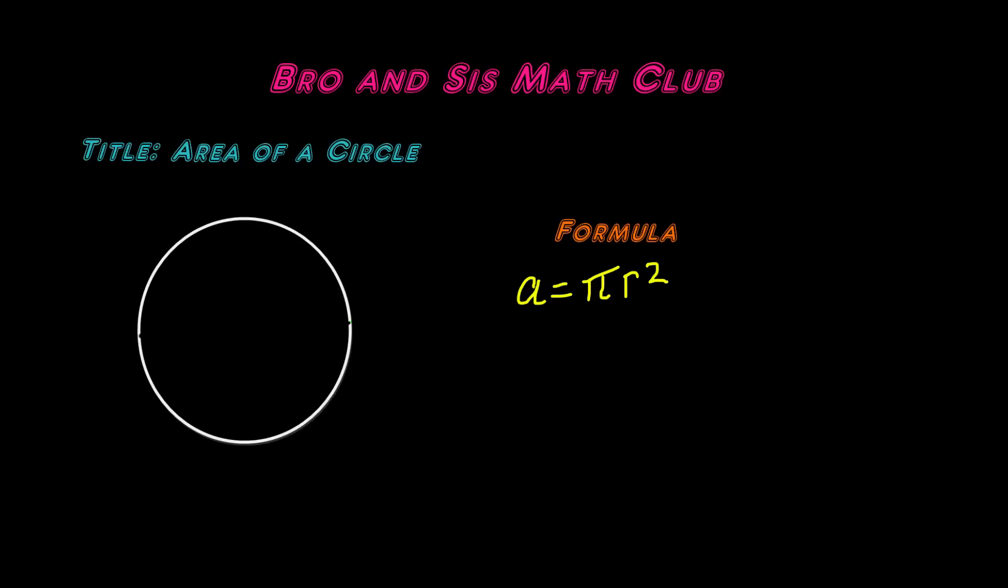So before we get started, let's go ahead and review what the radius is. The radius is the line that stretches from the middle of the circle to any end of the circle. So let me demonstrate. We know that the circle has a midpoint, which is the center. So this is the center of the circle. Now from the center to any end of the circle will be the radius. So let's say that the radius goes to this end. So this will be the radius.